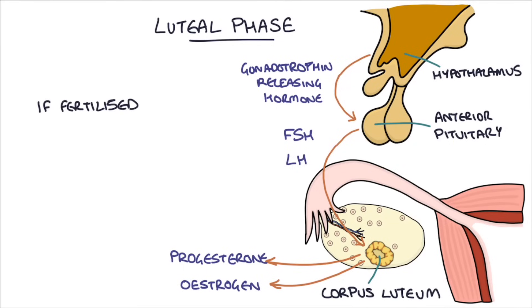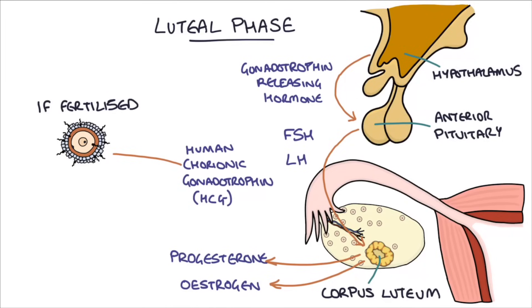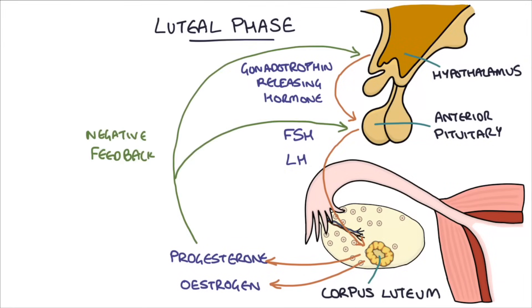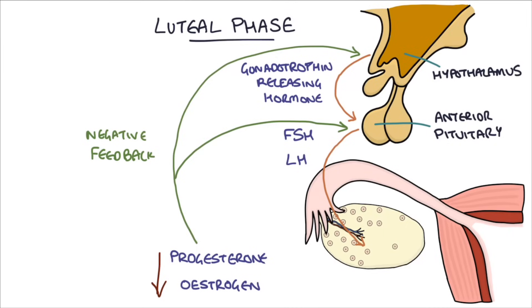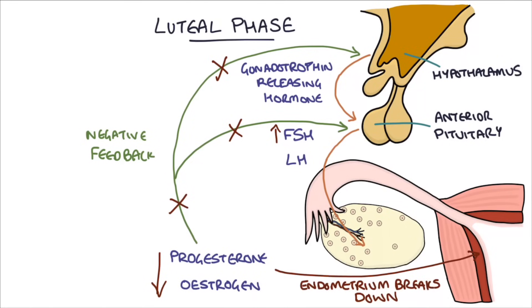If the egg is fertilized, the embryo secretes something called human chorionic gonadotrophin, or HCG, and that keeps the corpus luteum alive. HCG is the hormone that we check in the pregnancy test. But if the ovum is not fertilized and no HCG is produced, the corpus luteum will degenerate and stops producing progesterone and estrogen. This drop in estrogen and progesterone removes the negative feedback to the hypothalamus and pituitary gland, and the levels of FSH begin to rise again and the cycle is restarted.